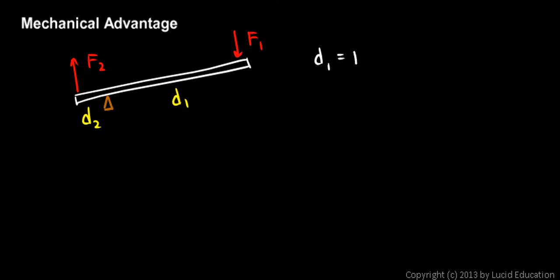example, if D1 is 12 feet and D2 is 3 feet, the ratio of those distances, D1 over D2 in this case, is 4.